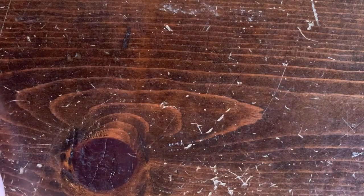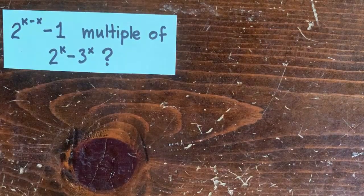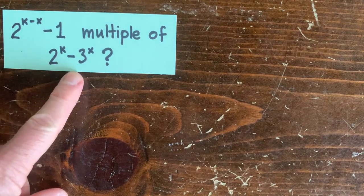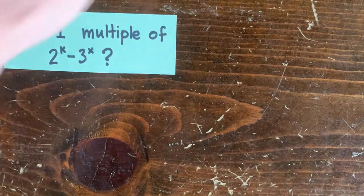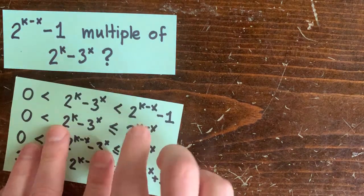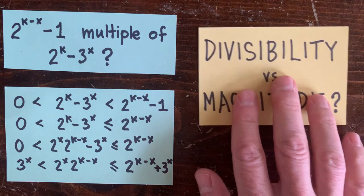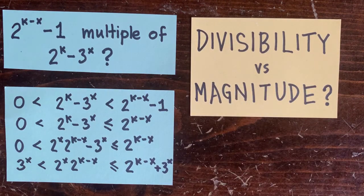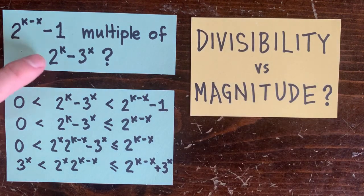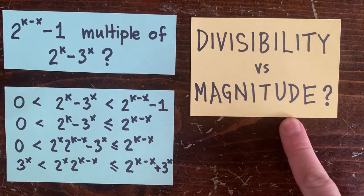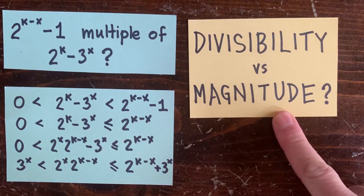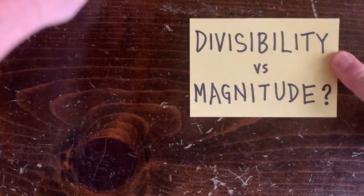Or we can back all the way up. We want to know if this is a multiple of that, right? We said, well, let's just show that this isn't even bigger than that. So we got ourselves into 3^x over 2^x and fractions like that. If we want to know whether this is a multiple of that, maybe we stop calculating the magnitudes of these two numbers and start figuring on whether they're divisible or not.